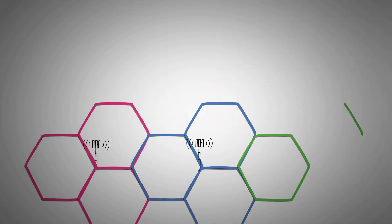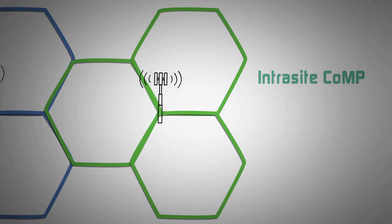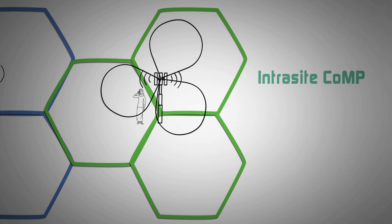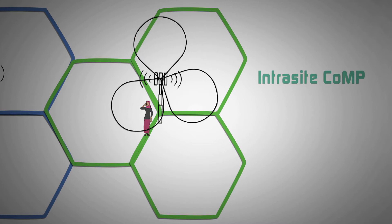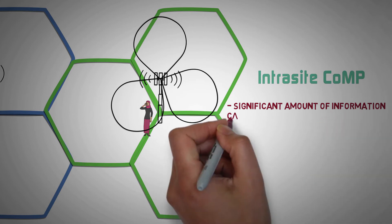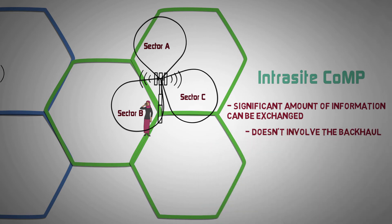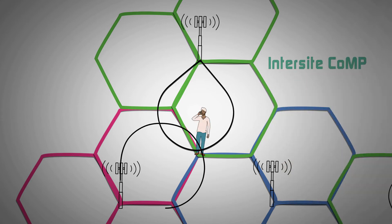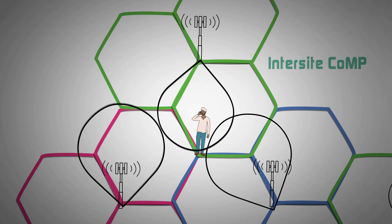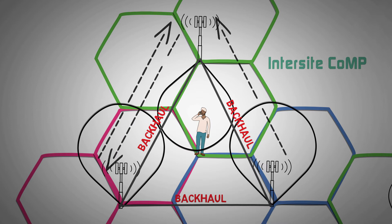There are primarily two types of Coordinated Multipoint. First, Intrasite Coordinated Multipoint, where multiple sectors of one eNodeB cooperate. The advantage is that a significant amount of information can be exchanged since the communication is within the cells of the same eNodeB and doesn't involve the backhaul. Second, Intersite Coordinated Multipoint, which involves coordination of multiple eNodeBs and puts additional burden on the backhaul as a lot of information is exchanged.